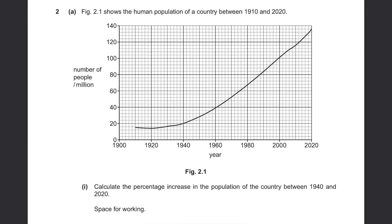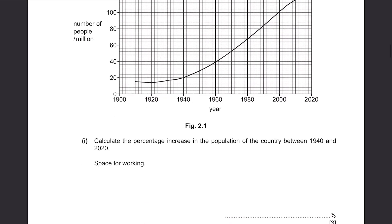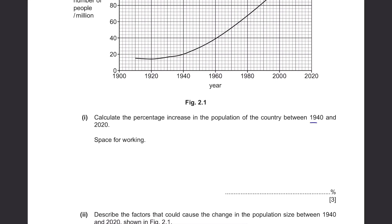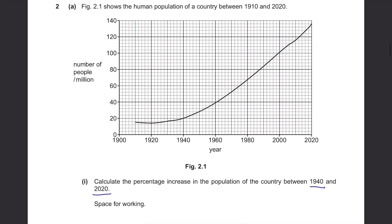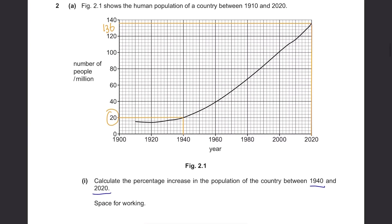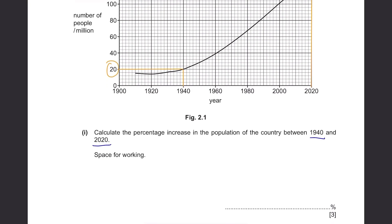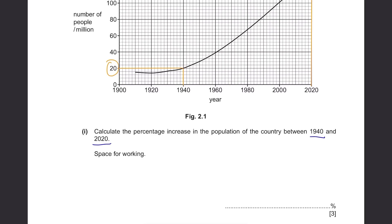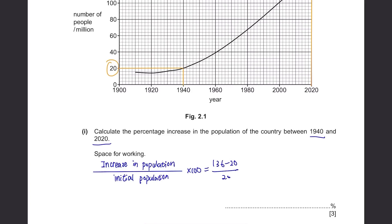Question 2, Part A. Figure 2.1 shows the human population of a country between 1910 and 2020, increasing gradually. Calculate the percentage increase in population between 1940 and 2020. The population in 1940 was 20 million and in 2020 was 136 million. To find the percentage increase: (136 − 20) ÷ 20 × 100 = 580%.